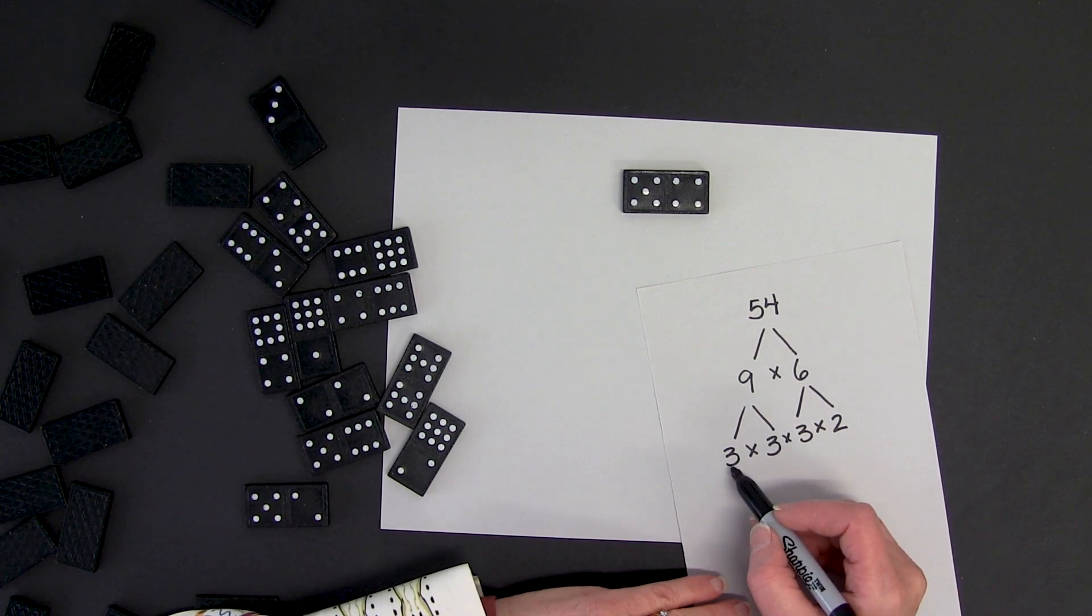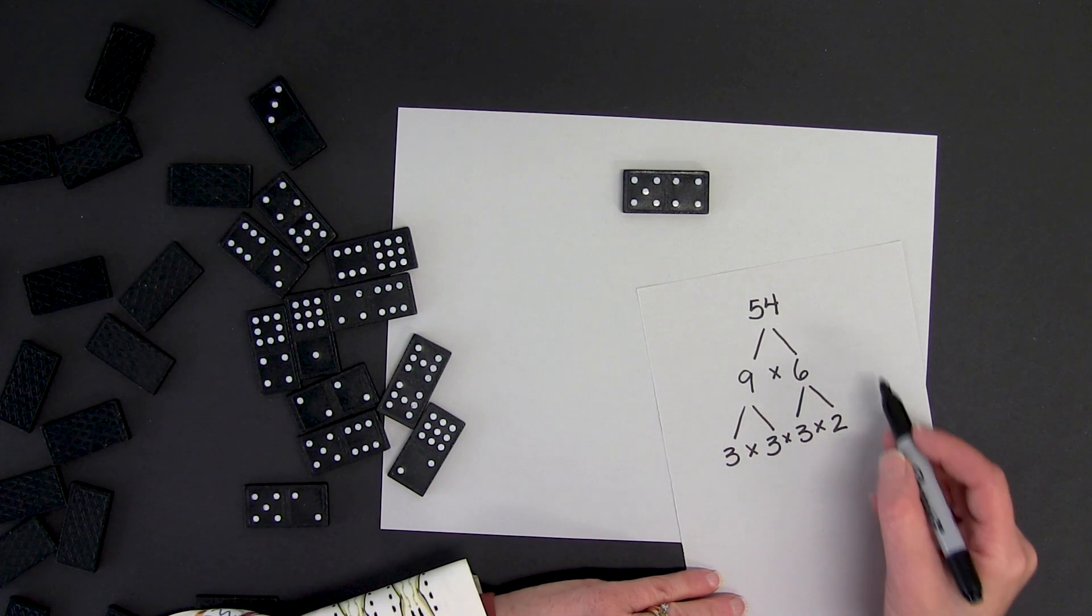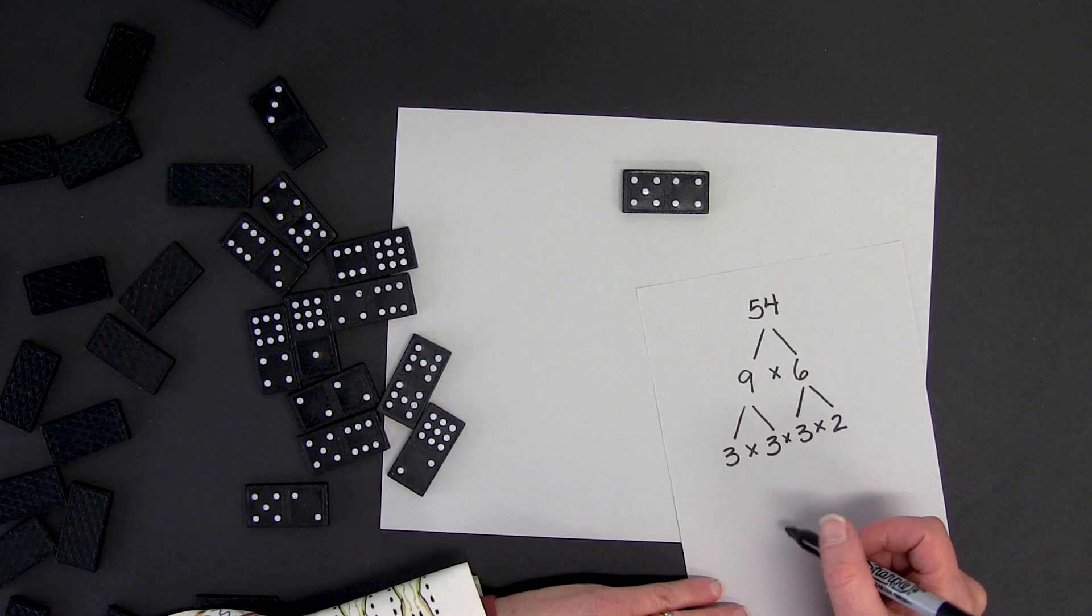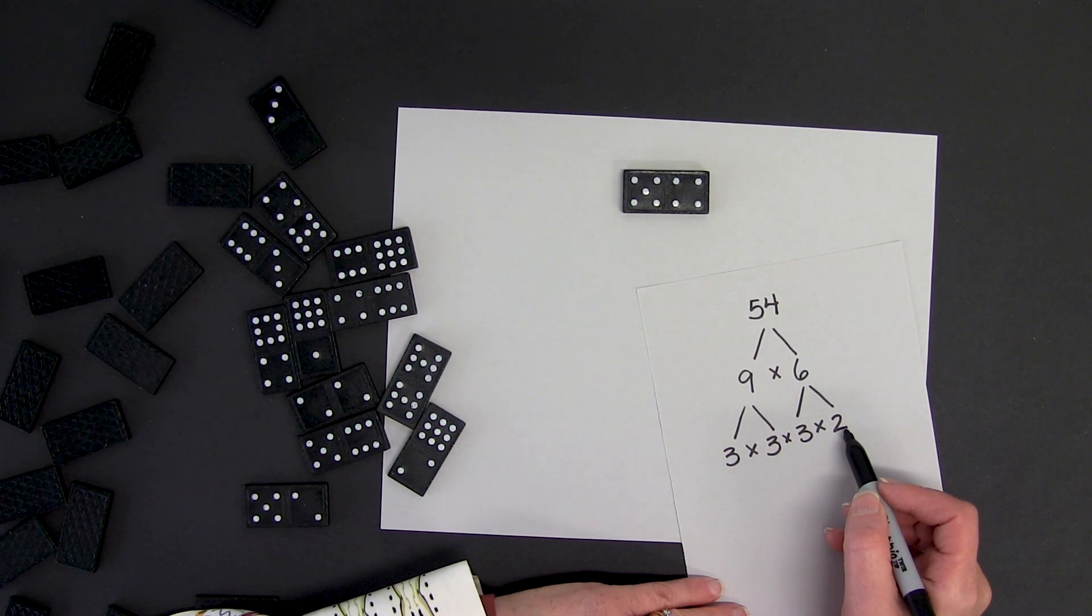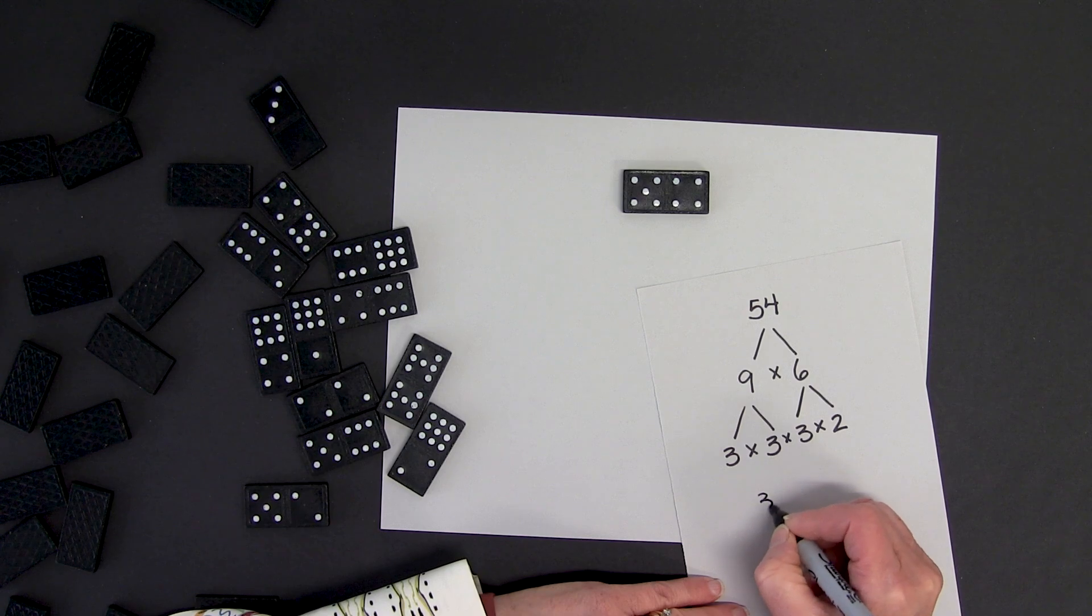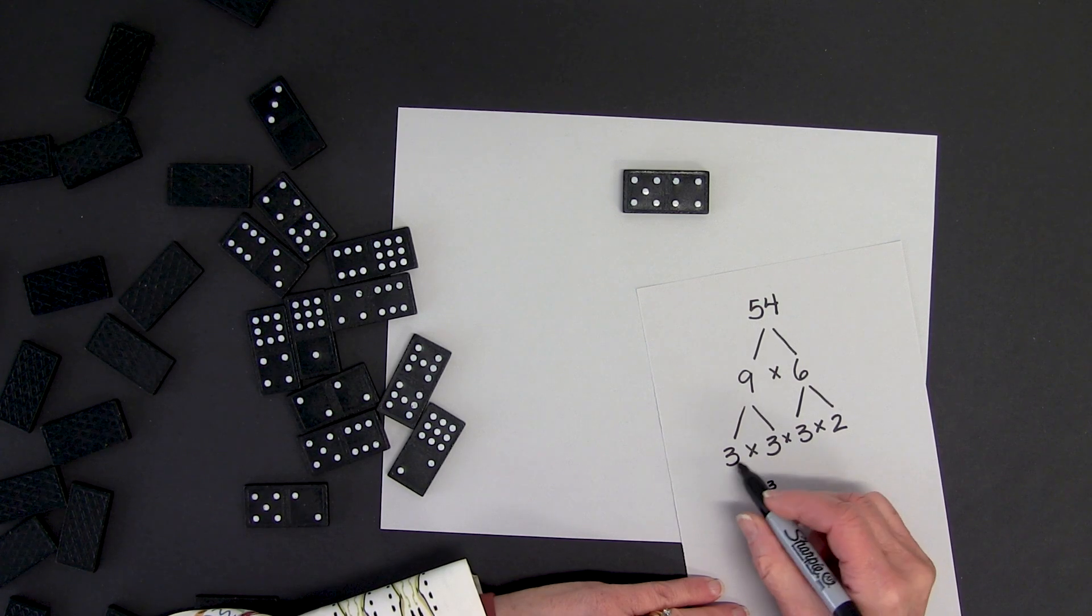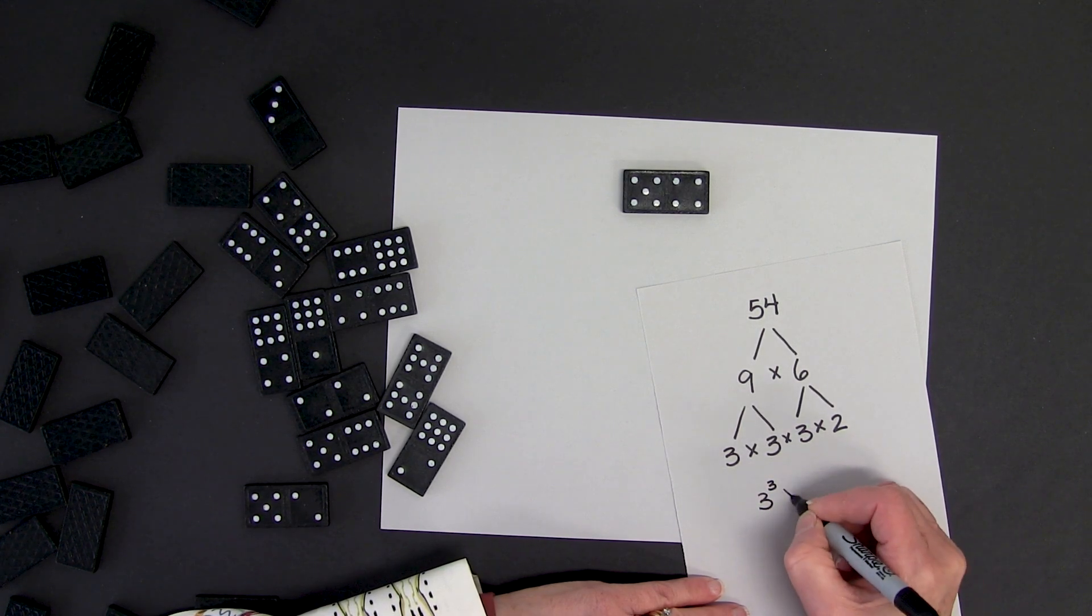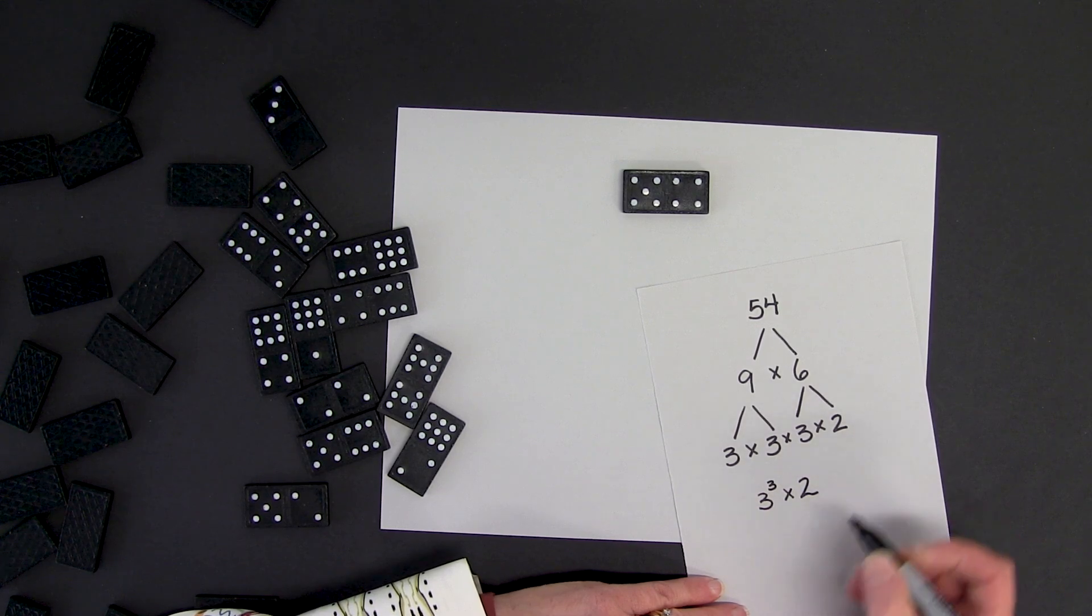So I can express the prime factorization of 54 as 3 times 3 times 3 times 2. Or I could say 3 to the power of 3 times 2.